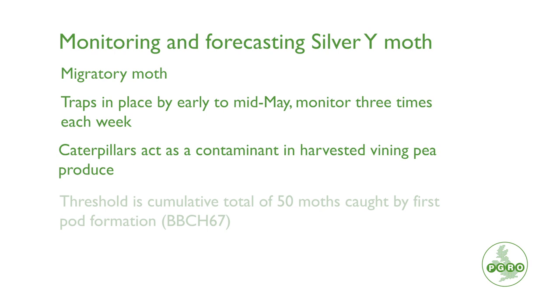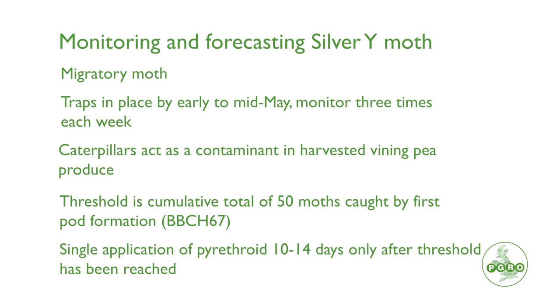The threshold for silver Y moth is a cumulative total of 50 moths by the time that first pods are formed on plants. A pyrethroid spray should be applied 10 to 14 days after that threshold has been reached. That way we can control both the large caterpillars and those smaller caterpillars, and a single application in vining peas is sufficient to give you good control of silver Y moth.